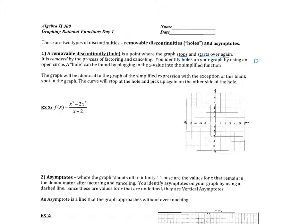Let's take a look at an example. We have the function f of x equals x cubed minus 2x squared divided by x minus 2. We know that x cannot equal 2, because we'd have 2 minus 2 which gives us 0, and we can't divide by 0. So we factor the numerator — we take out the GCF of x squared, leaving us with x squared times x minus 2 over x minus 2. The same factor in the numerator and denominator cancels, and our function simplifies to x squared. This factor that's removed tells us we're going to have a hole at x equals 2.